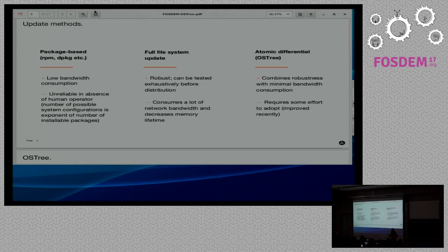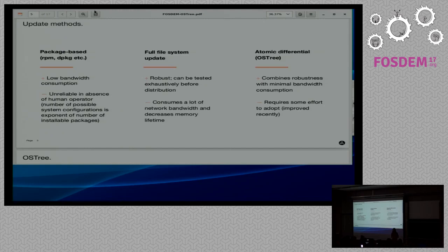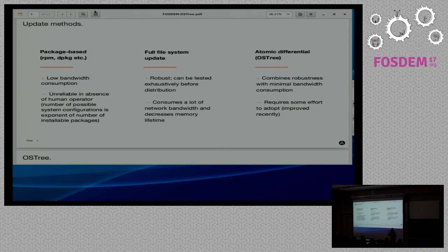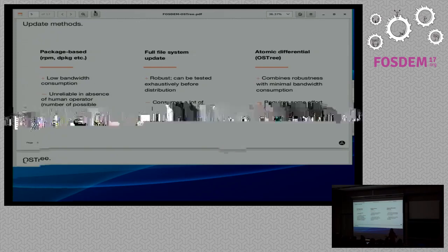We now have basically three methods of delivering updates. First is package-based, which is what we use in all our desktop or server Linux distributions. It's convenient — we only download what we want to download, which is important for over-the-air updates where bandwidth is expensive. But it's not fit for embedded systems because we don't have a human operator. If a package is not compatible with another, or two mutually dependent packages break installation halfway, we can't recover from that.